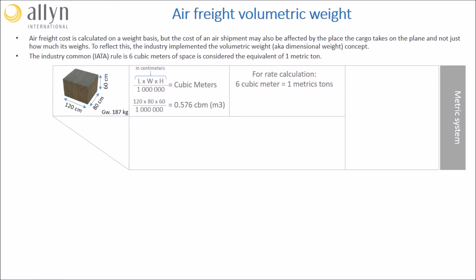Based on the rule that 6 cubic meters equals 1 metric ton, we simply divide the volume in cubic meters by 6, which in our case gives 0.096 metric tons or 96 kilos of volumetric weight. We then simply compare this volumetric weight and the real one and take the highest of the two.